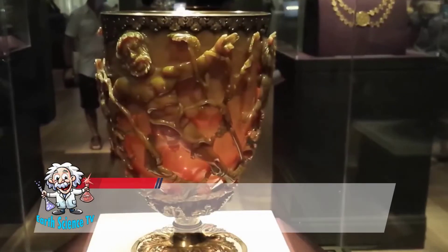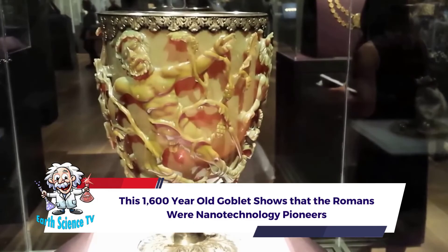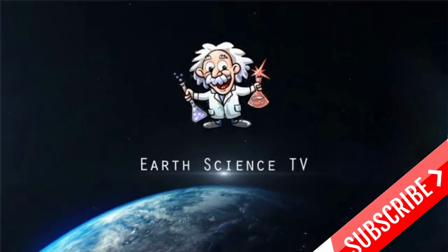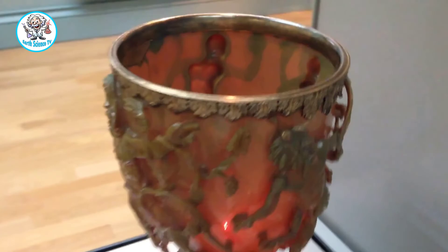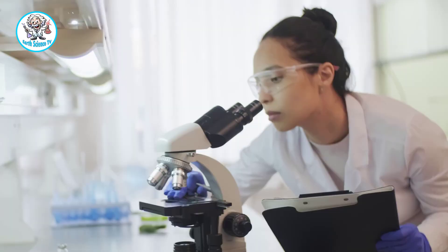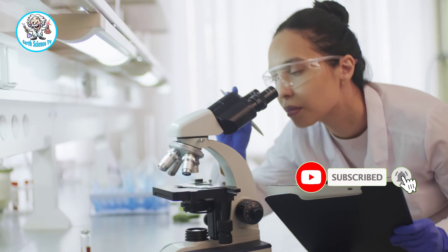This 1,600-year-old goblet shows that the Romans were nanotechnology pioneers. The colorful secret of a 1,600-year-old Roman chalice at the British Museum is the key to a super-sensitive new technology that might help diagnose human disease or pinpoint biohazards at security checkpoints.